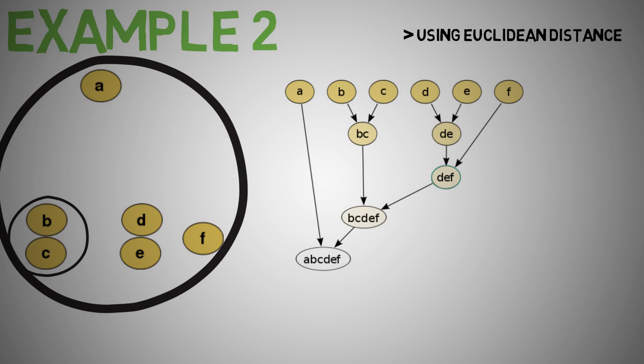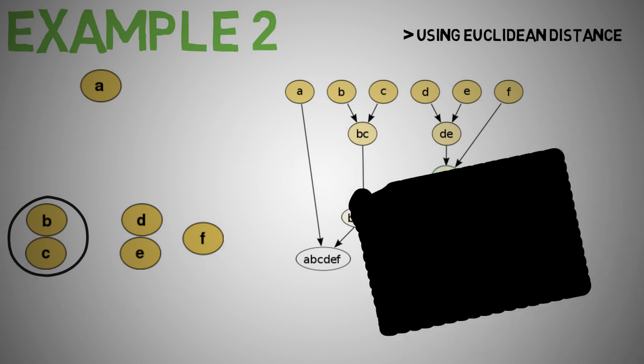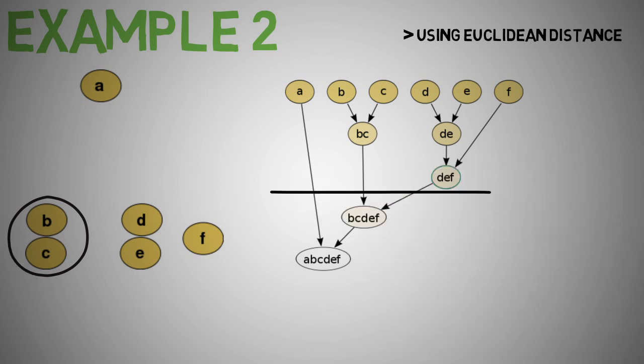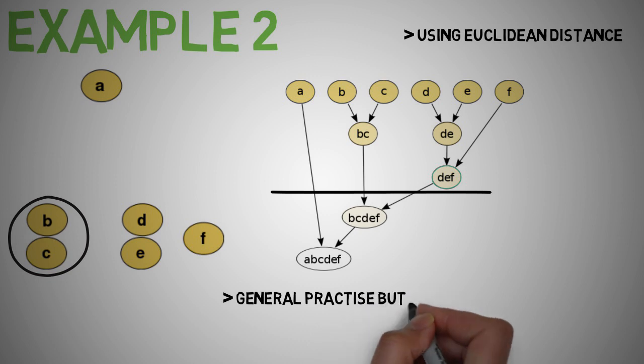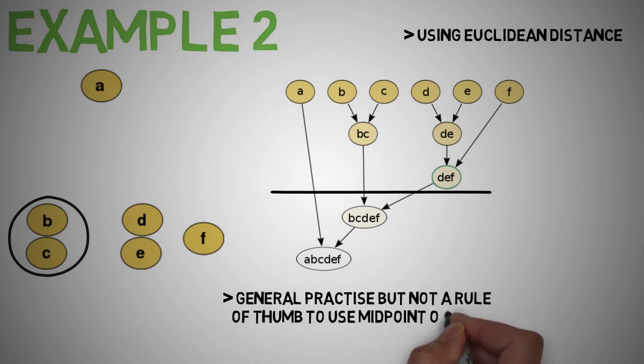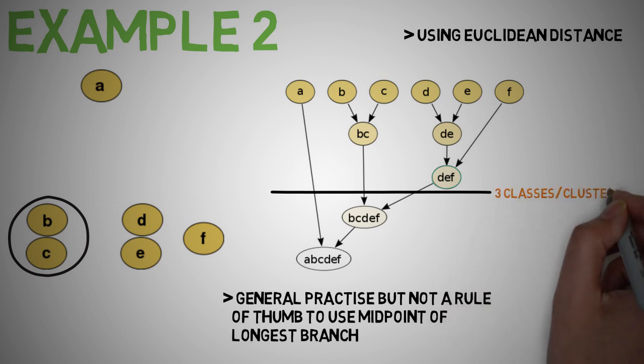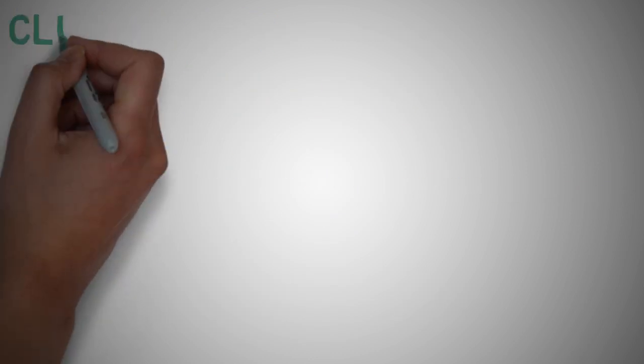And then finally we merge BC DEF with a much further cluster A. And now you can see from our dendogram we can choose our clusters as either 3 or 2 based on the threshold we place. Now while there are many ways to find the optimal threshold, a general practice would be for us to take the midpoint of the longest branch of our dendogram and make that our threshold thus leading to 3 classes. I hope all this is making sense on how hierarchical clustering works.